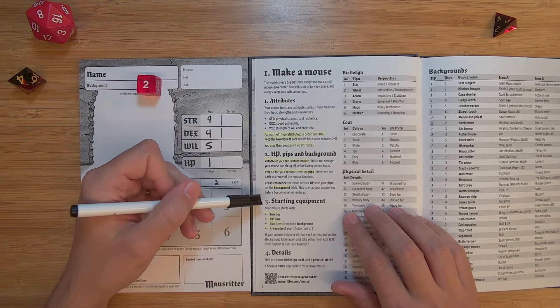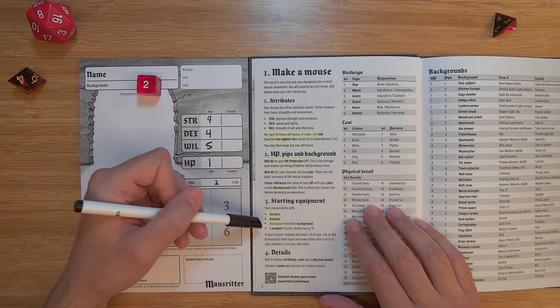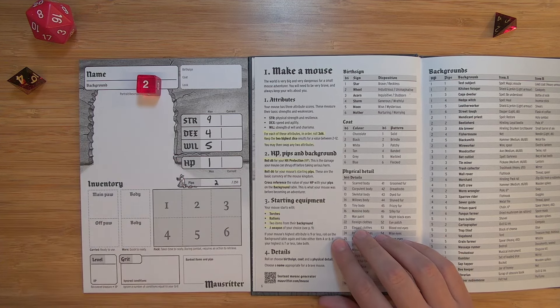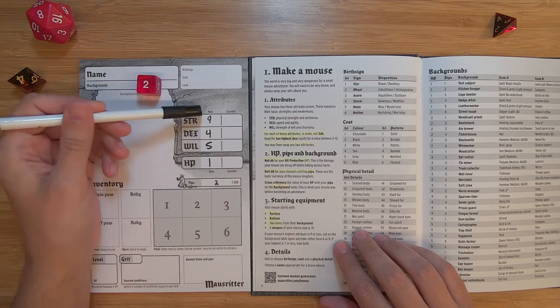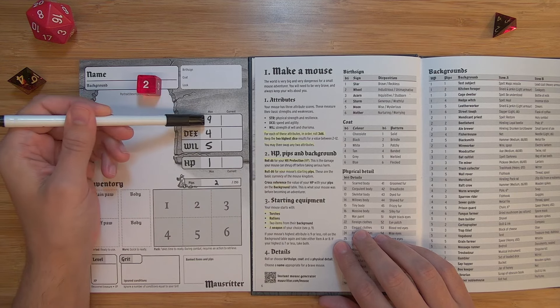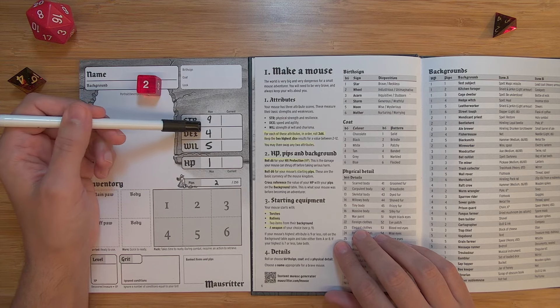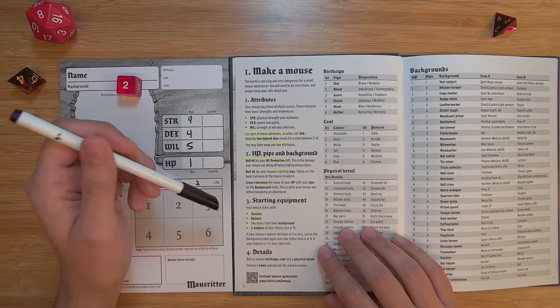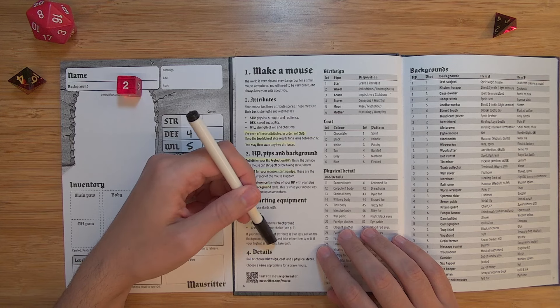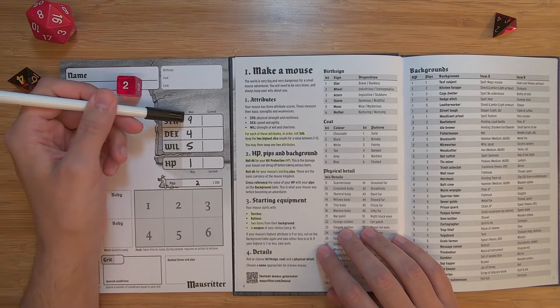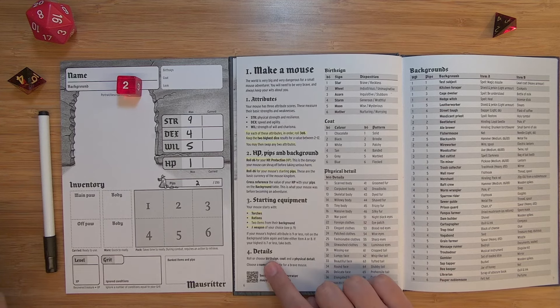So normally you probably wouldn't write in marker. You'd write with a pencil or something else. But just for now, since I've already got the cool mouse ridder branded pen. Starting equipment, your mouse starts with torches, rations, two items from the background, and a weapon of your choice. If your mouse's highest attribute is 9 or less, roll on the background table again. Okay. So our highest attribute is 9 or less. So in order to compensate for lower skill points that you roll, you get an additional roll on the background table. And you can take either one of them. If your highest is 7 or less, take both. So I kind of wish my strength was 7, but we'll leave it.